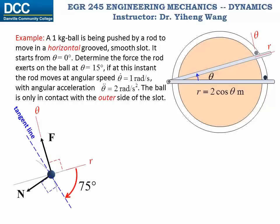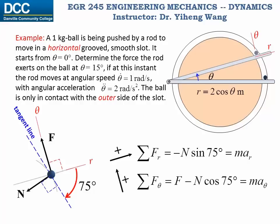Now we are ready to write the equations of motion. The resultant force along the radial r direction equals negative N times sine 75 degrees, which equals m times the acceleration along the radial direction. The resultant force along the transverse theta direction equals F minus N cosine 75 degrees, which equals m·a-theta. Both N and F are unknowns, so we need to first find out what ar and a-theta are, and then we can solve for our unknowns.